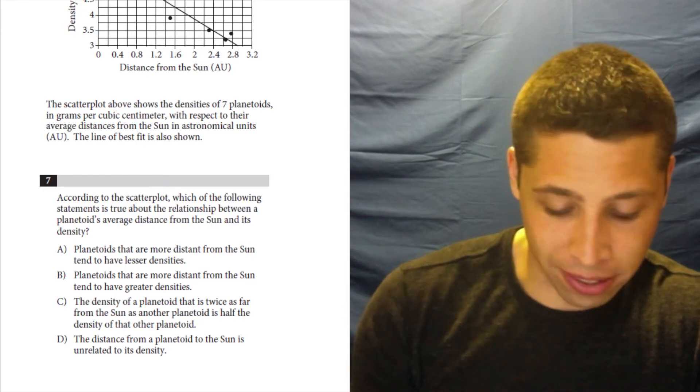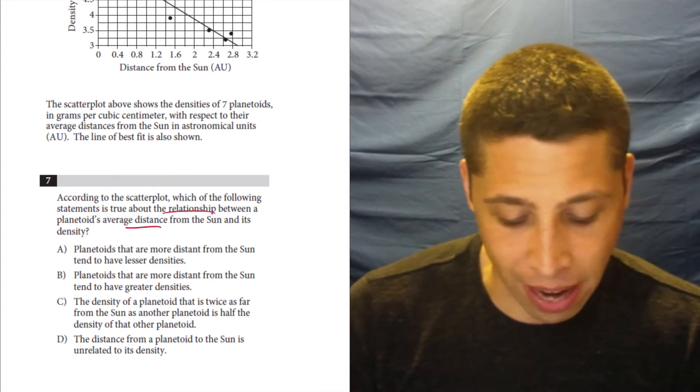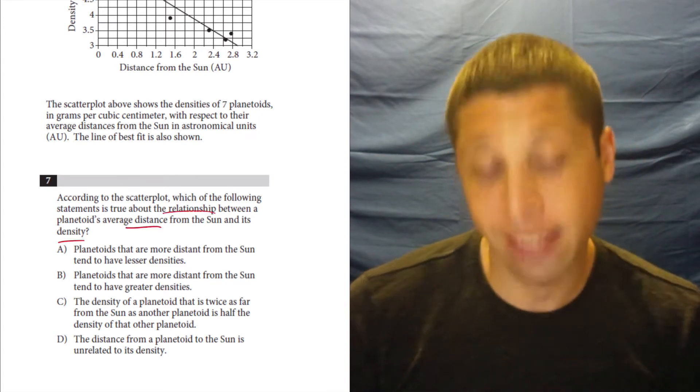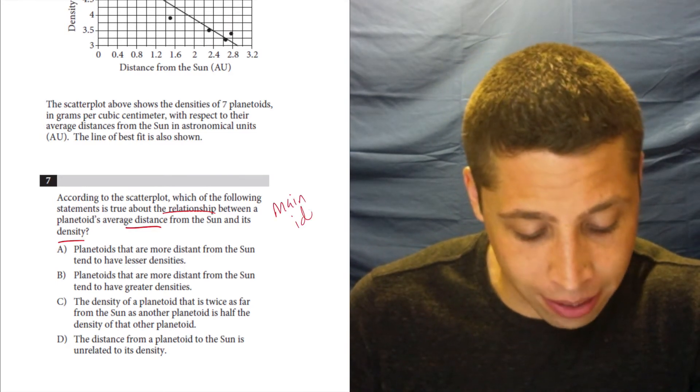So they're asking us here, according to the scatterplot, which of the following statements is true about the relationship between a planetoid's average distance from the sun and its density? This is like a very math way of just saying, what's the main idea, right?